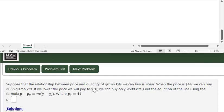We have a linear relationship between price and quantity. Price is $44, that's the second coordinate, then the quantity is 3,036. But if we're only willing to pay $10, we will only be allowed to buy 2,699 kits. Find the equation of the line using this formula.